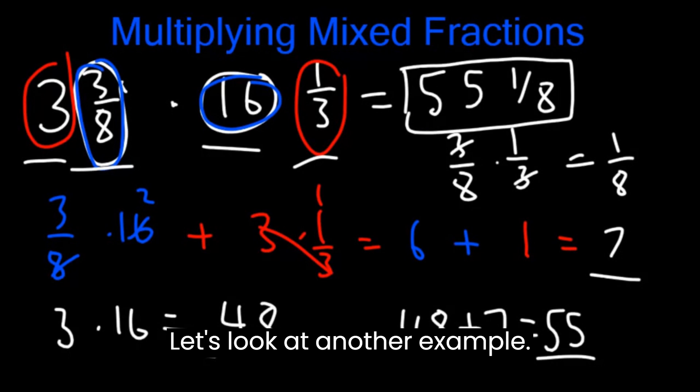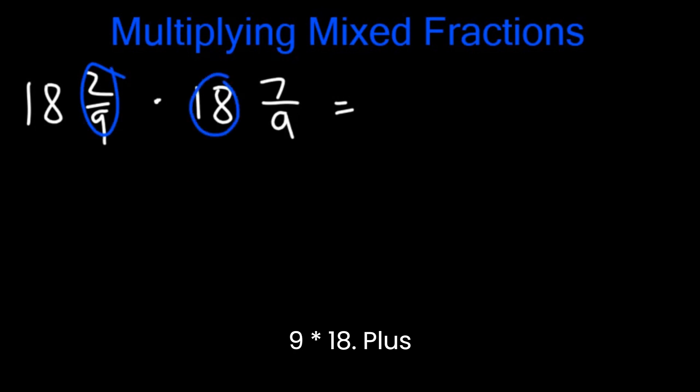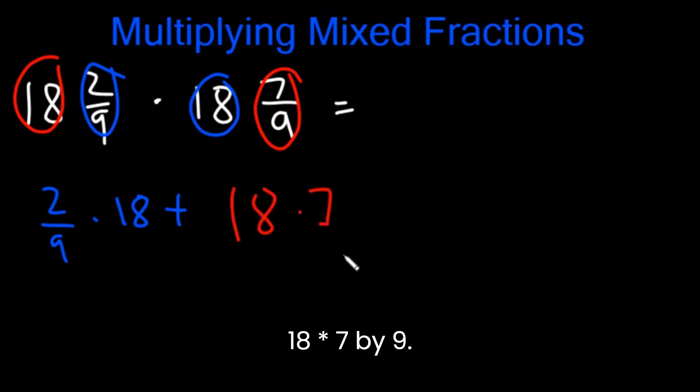Let's look at another example. Let's say we have 18 2/9 times 18 7/9. So again, we're going to do 2/9 times 18 plus 18 times 7/9. So 18 times 2/9 plus 18 times 7/9.